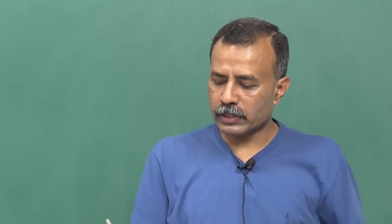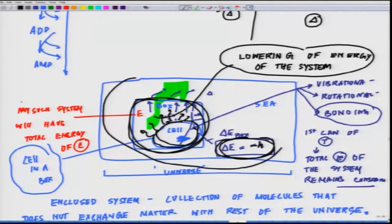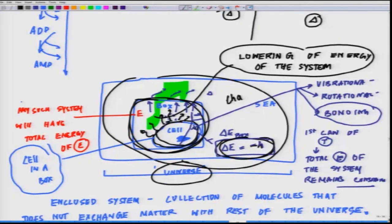It is a kind of contradiction. If this is the system and this is the surrounding universe, this universe is heading for more chaos, yet the life form is evolving in the reverse direction — becoming more and more ordered.